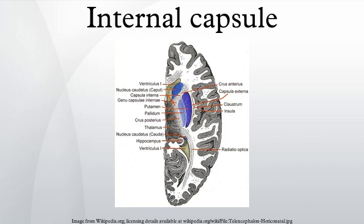The internal capsule contains fibers going to and coming from the cerebral cortex. The corticospinal tract constitutes a large part of the internal capsule, carrying motor information from the primary motor cortex to the lower motor neurons in the spinal cord. Above the basal ganglia the corticospinal tract is part of the corona radiata; below the basal ganglia the tract is called crus cerebri, and below the pons it is referred to as the corticospinal tract.